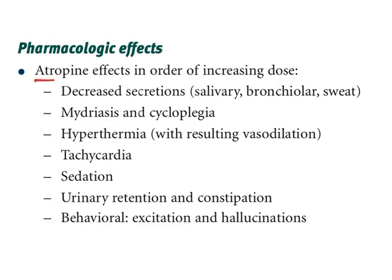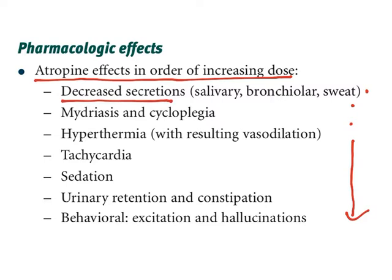Atropine effects occur in order of increasing dose — at smaller doses you have certain effects, and as dose increases those effects follow. The first is decreased secretions. Atropine is anti-cholinergic; cholinergic responses include salivation, urination, digestion, and defecation. So all secretions are reduced — salivation, bronchial secretion, sweat — everything will get reduced.